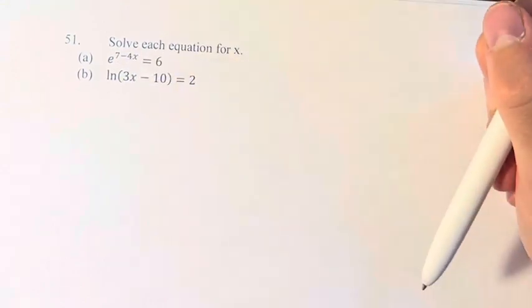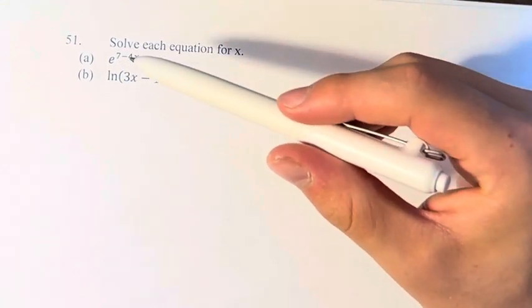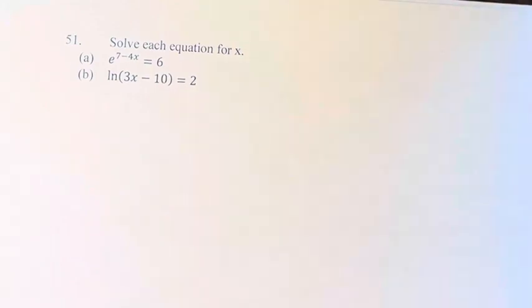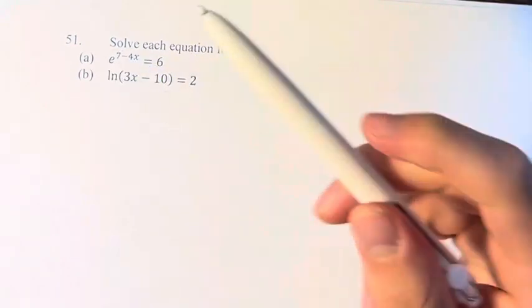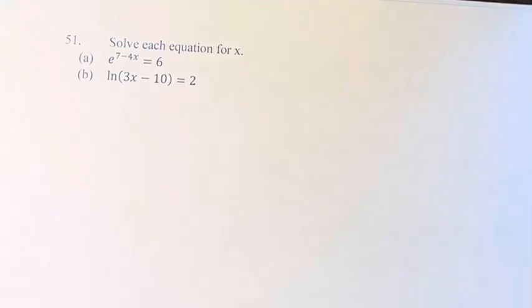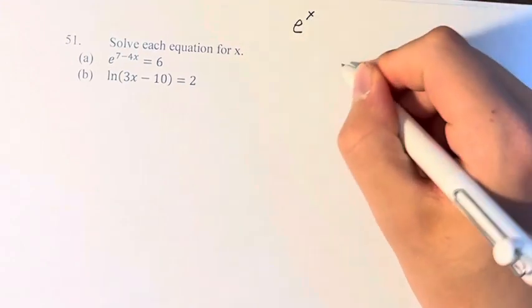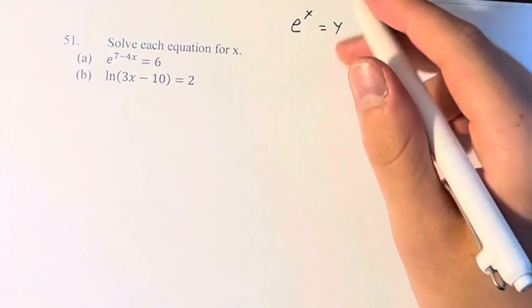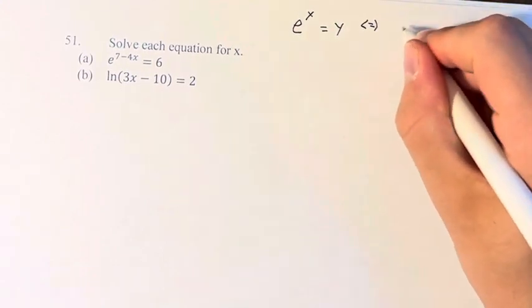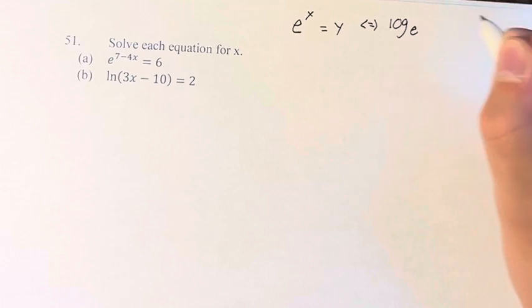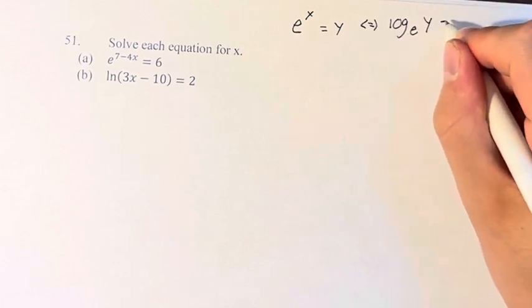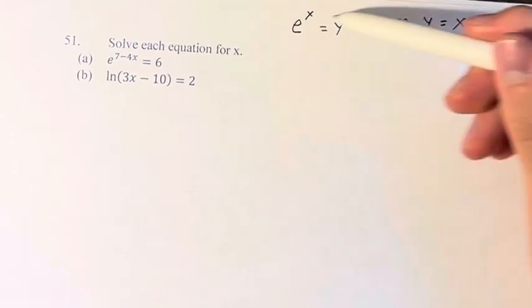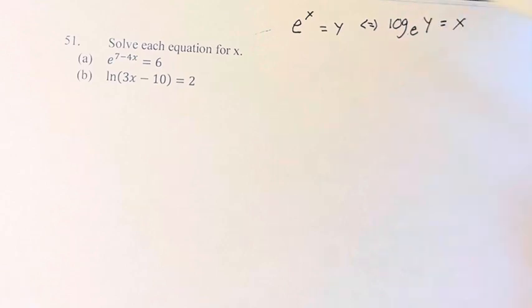So we have these two equations here, and we're going to use the fact that we have a relationship between exponentials and logarithms. If we had e to the x equals y, this means that log base e of y equals x. So we're moving these variables around to be able to solve the equation in one way or another. And of course, it doesn't have to be e, it can be any base.